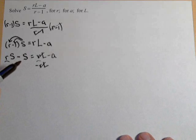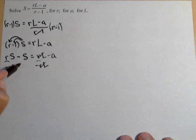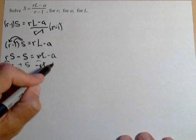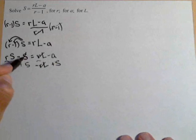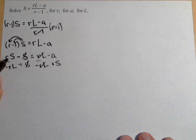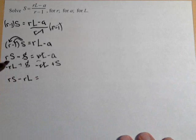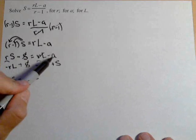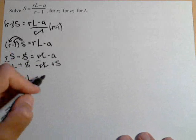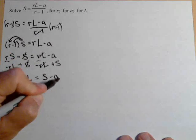Now, all the terms that do not have an R in them need to go to the other side. So that means this is already good. We need to move the S over, and we can do that by adding it. So looking at what we have left, we have RS minus RL on the left-hand side. On the right-hand side, we have negative A and positive S, so let's write it as S minus A.